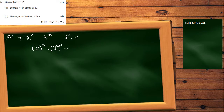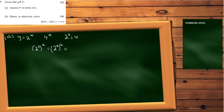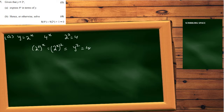Now we have 2 to the x appearing in the expression for 4 to the x. Since 2 to the x is given as y, we replace it with y, and what we get is y squared. So the relationship is y squared equals 4 to the x — that is part one.